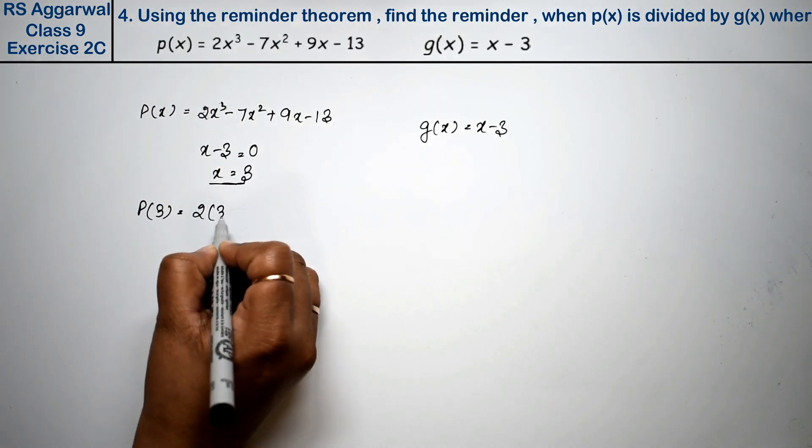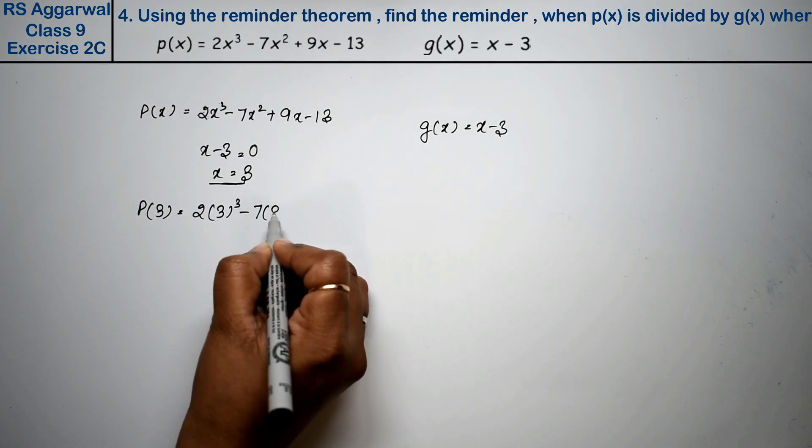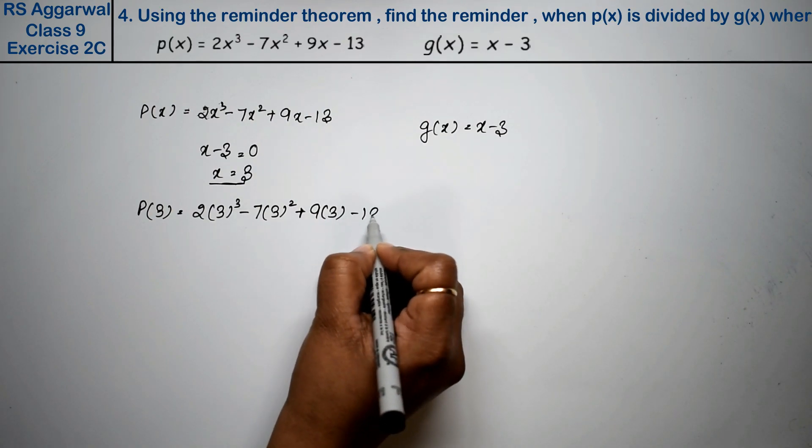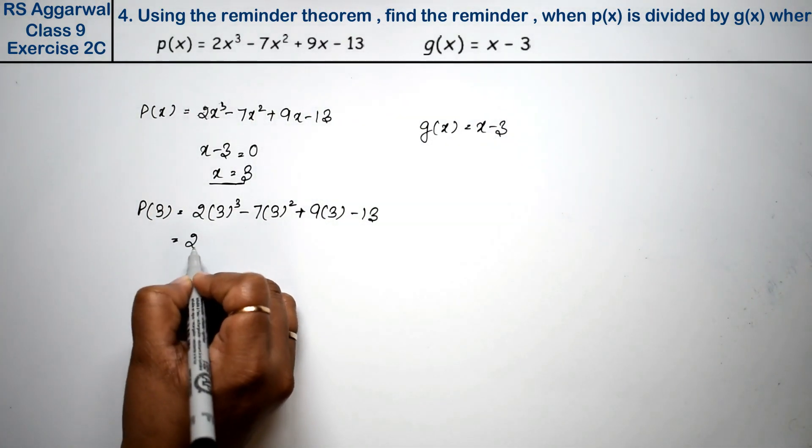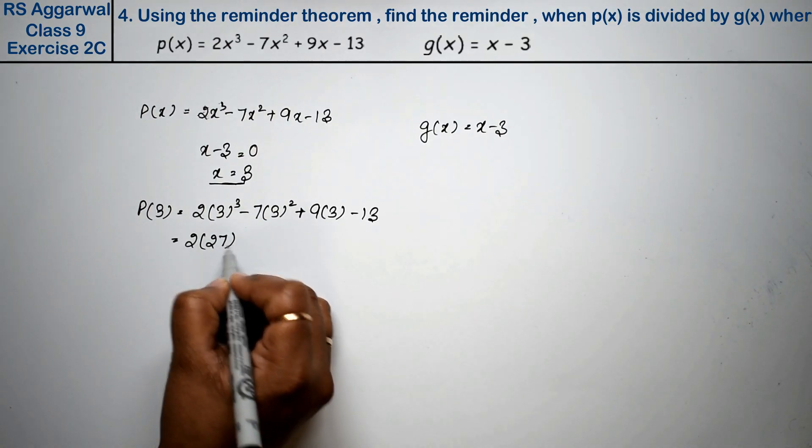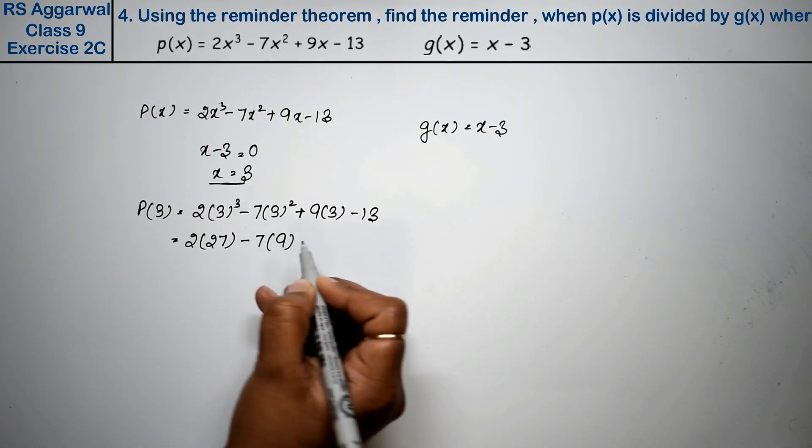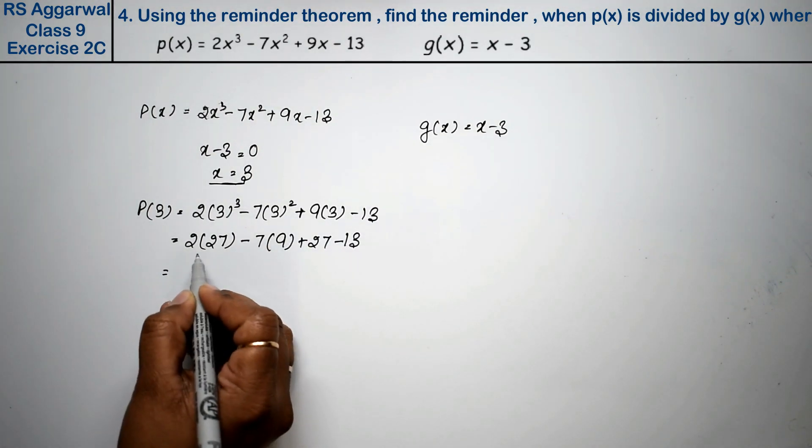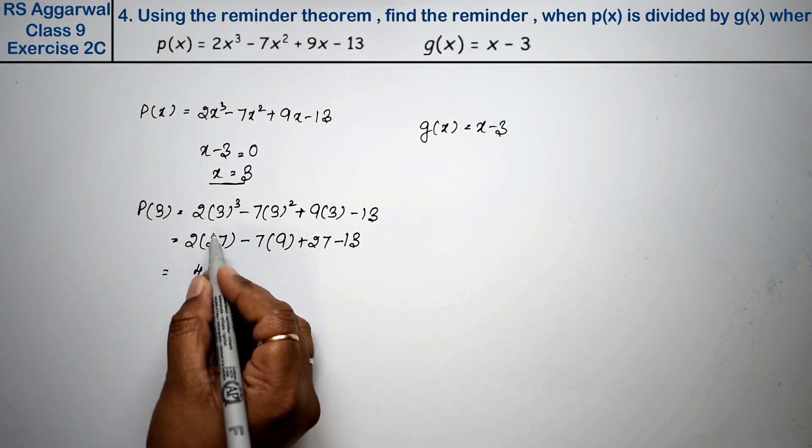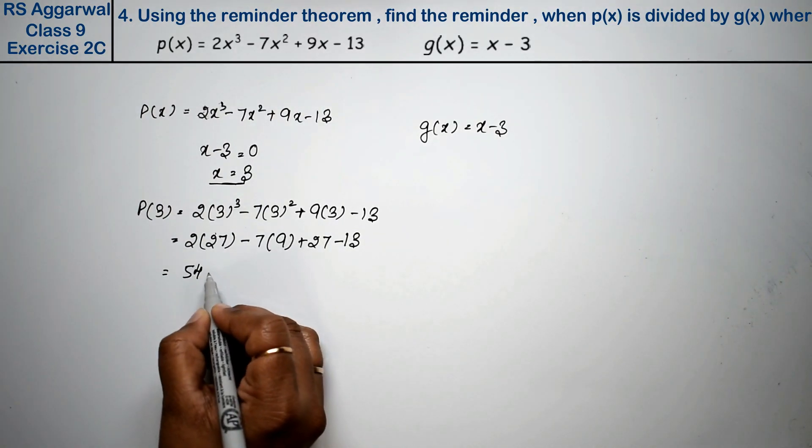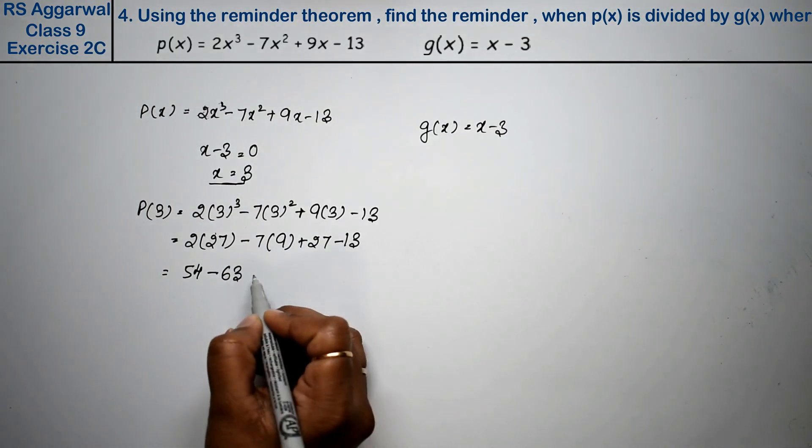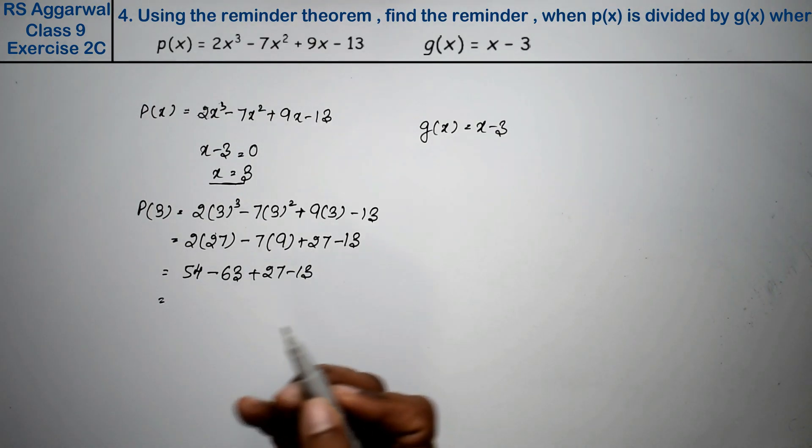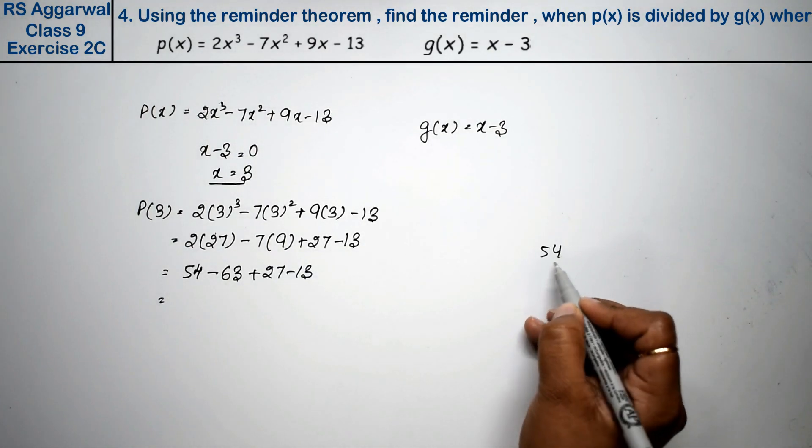So here, p(3) equals 2 times 3 cubed minus 7 times 3 squared plus 9 times 3 minus 13. That is 2 times 27 minus 7 times 9 plus 27 minus 13, which equals 54 minus 63 plus 27 minus 13.